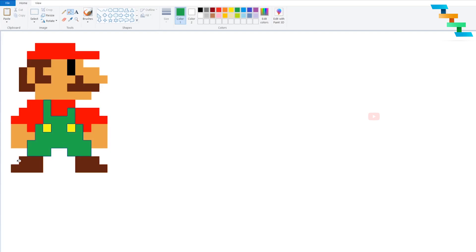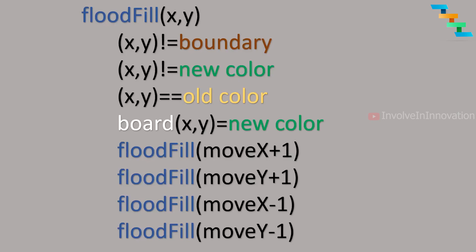First we will see the pseudo code for this flood fill algorithm. This algorithm takes five input parameters: the new color to which the old color needs to be replaced, the old color which needs to be replaced, the x and y axis of the pixel in the image, and the image which is represented as a two-dimensional array.